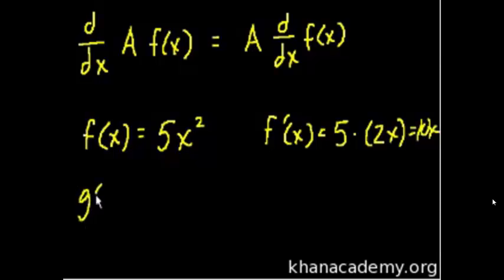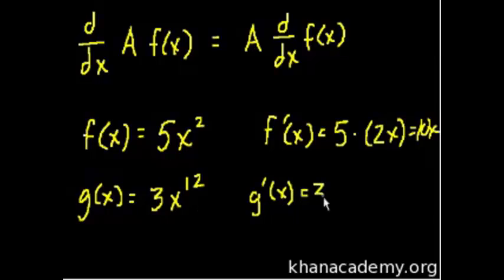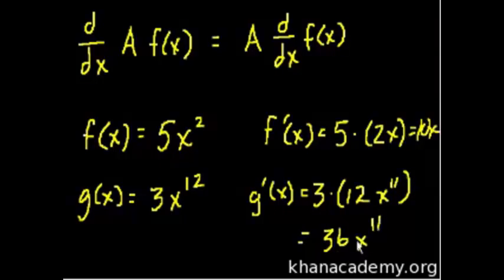Similarly, if I had g of x is equal to 3x to the 12th, then g prime of x, or the derivative of g, is equal to 3 times the derivative of x to the 12th. Well, we know what that is, that's 12x to the 11th, which is 36x to the 11th. Pretty straightforward. You just multiply the constant times whatever the derivative would have been. I think you get that.